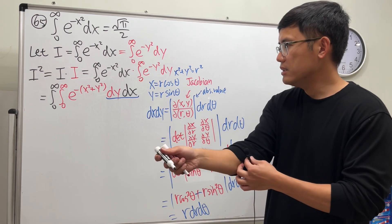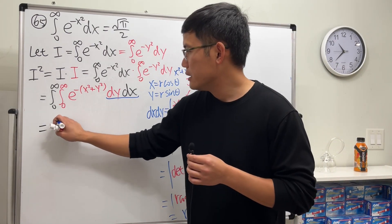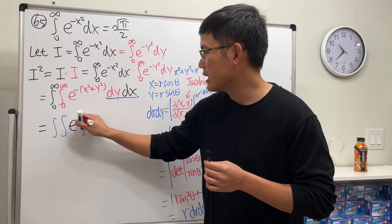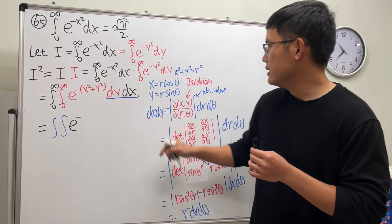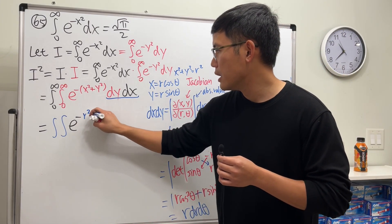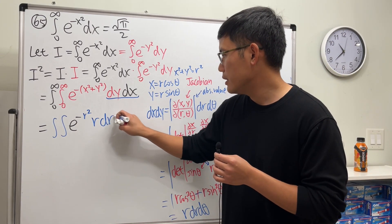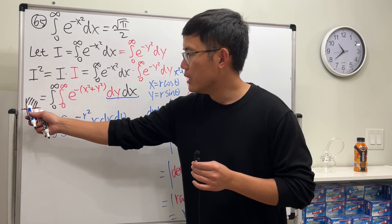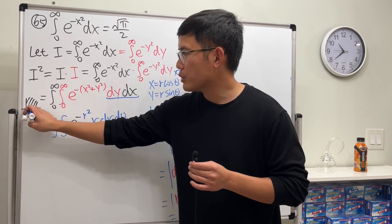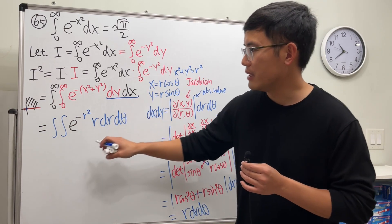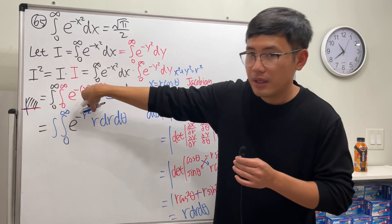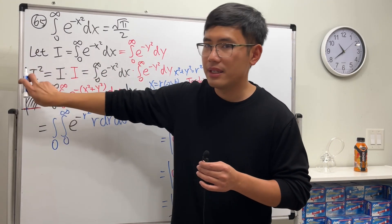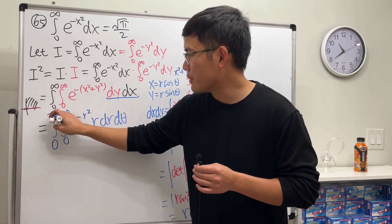Now the double integral becomes the integral of e to the negative r squared, times r dr d-theta. For the bounds: r goes from zero to infinity. For theta, looking at the region in the first quadrant, it goes from zero to pi over two — that is, zero to 90 degrees.